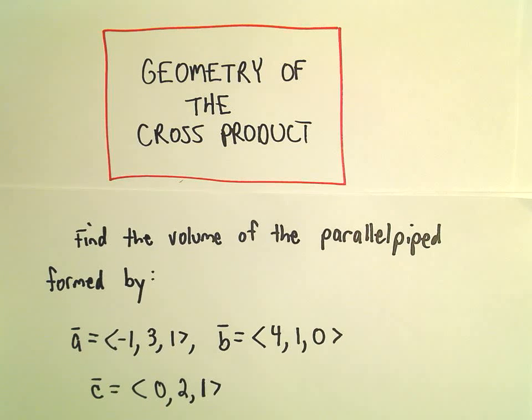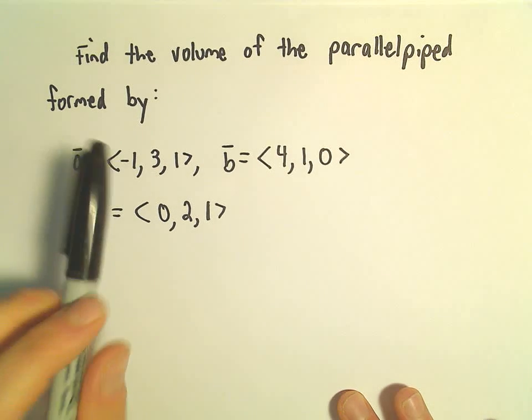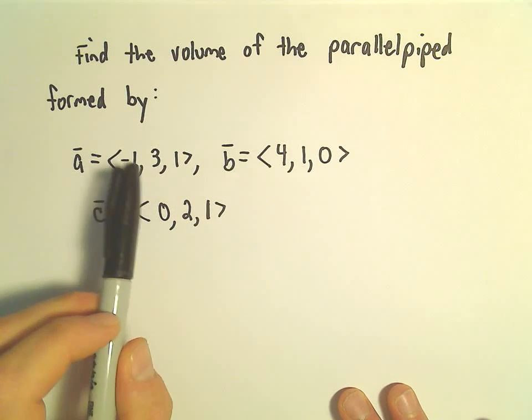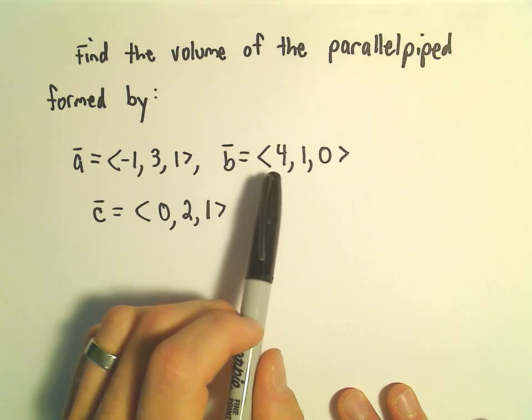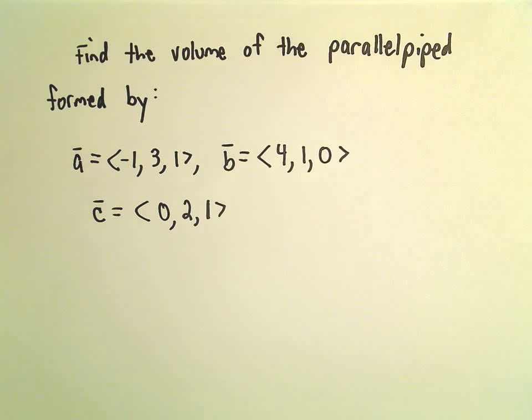Here we're going to look at an example of finding the volume of a parallelepiped that's formed by three vectors. We have the vectors a = <-1, 3, 1>, b = <4, 1, 0>, and c = <0, 2, 1>.